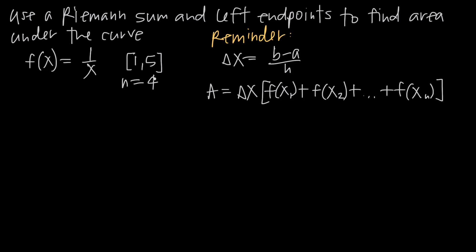Whenever you're dealing with a Riemann sum problem, the first thing you want to do is find delta x. Think of delta x as the width of each one of our rectangles. The formula is b minus a divided by n, where the interval we've been given is a to b. So delta x = (5 - 1) / 4 = 4/4 = 1. Delta x is equal to 1.